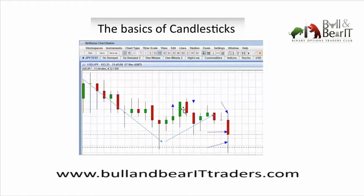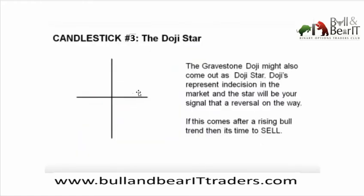Finally, there is the doji. A doji means complete indecision in the market. The buyers try to push the price up and after that the sellers push the price back down. Then the buyers push it back up again. If the power of the buyers and the sellers are the same, it shows a lot of uncertainty in the market, and the doji often represents a change of trend.